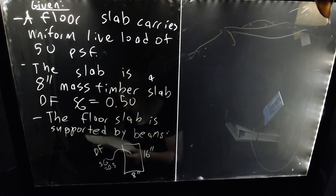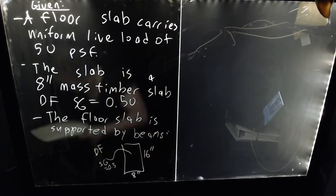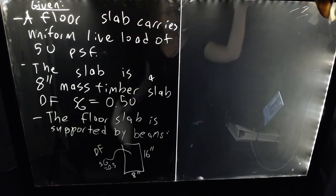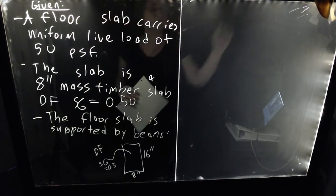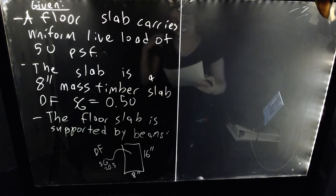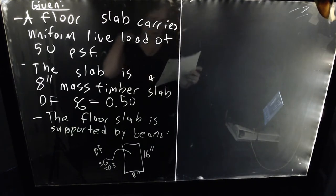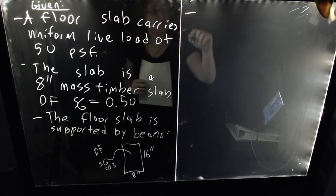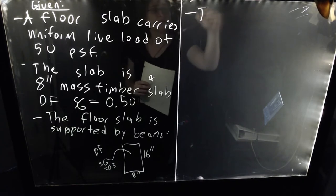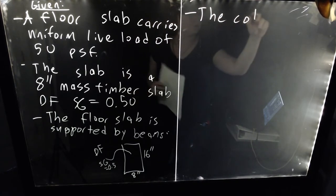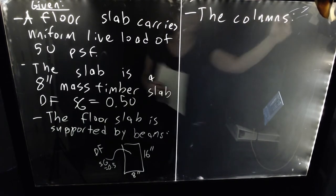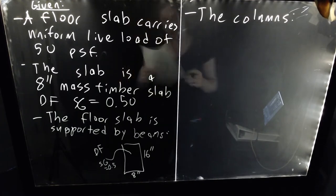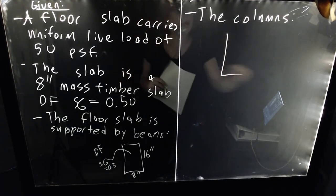The floor slab is supported by beams. These beams are going to be 8 inches wide and 16 inches deep, and are also going to be made of Douglas fir wood. The actual strength of the material isn't going to matter for this problem. All you need to know is that this is made of a material with a specific gravity equal to 0.5. The beams are not going to use a combination beam-girder system — this is going to be more of a two-way loading problem, so the beams are going to rest directly on columns.